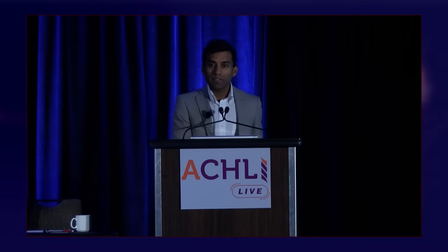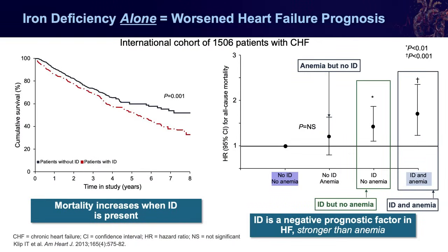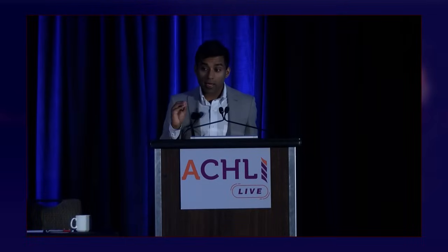Critically, iron deficiency alone — even without the downstream association of anemia — has prognostic significance. Patients with coexisting iron deficiency and heart failure have worse cumulative survival. And when broken down further, even people without anemia face excess risk of mortality from iron deficiency alone. This is critical to the diagnosis: it does not require the concurrent presence of anemia.